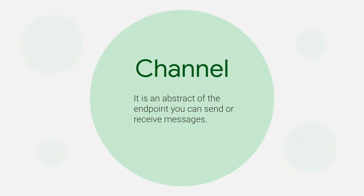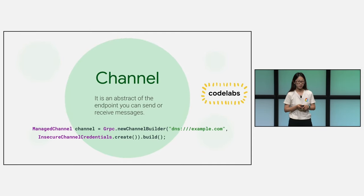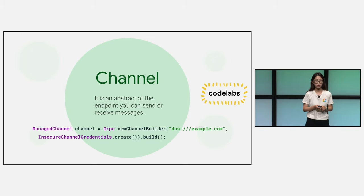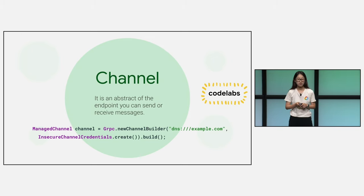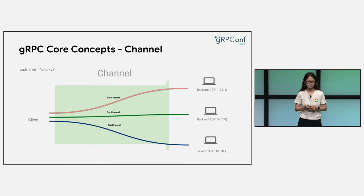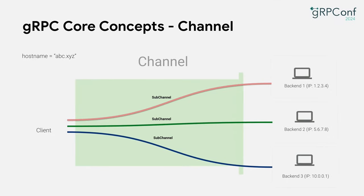gRPC's core concepts start with the channel. A channel is an abstraction of the endpoint from which you can send or receive messages. It is the first object you will create when using gRPC. To create a channel, you provide the target URI string to specify the remote hostname and then channel credentials for authorization. The sub-channels are the real connections towards the backend services. gRPC during its lifecycle will create those sub-channels, dynamically select sub-channels to multiplex RPCs over the channel, report channel status, and finally tear down sub-channels to return resources.